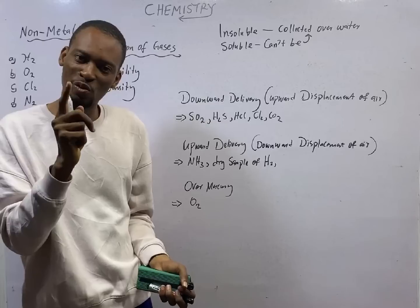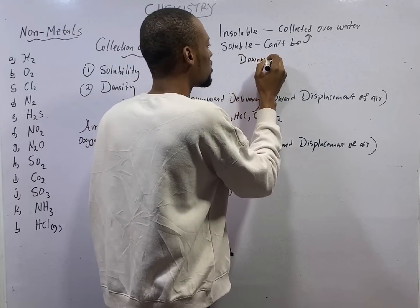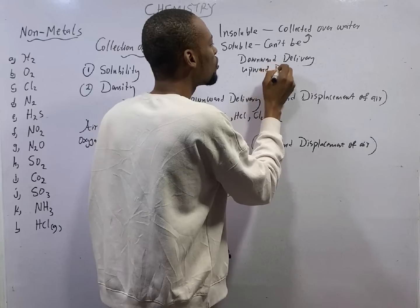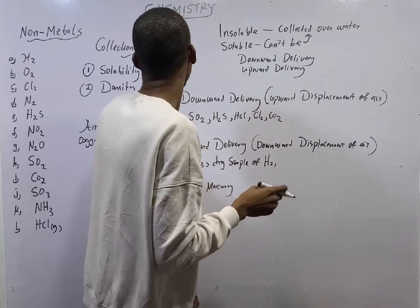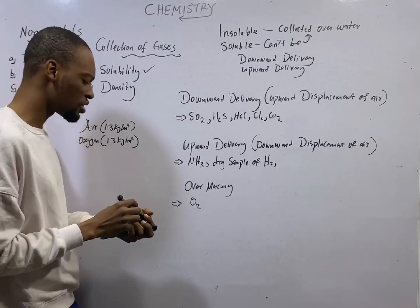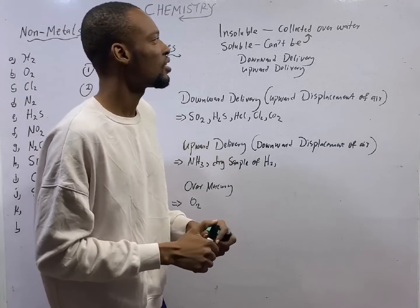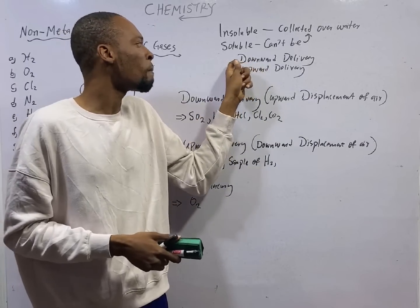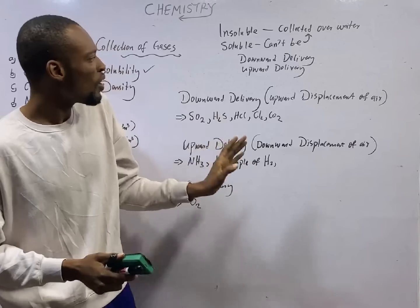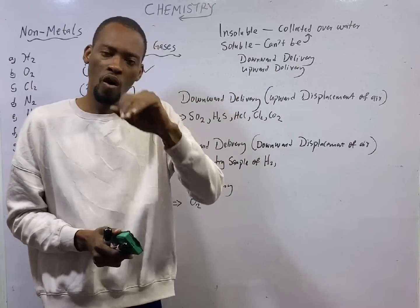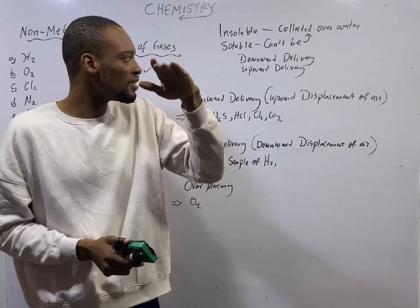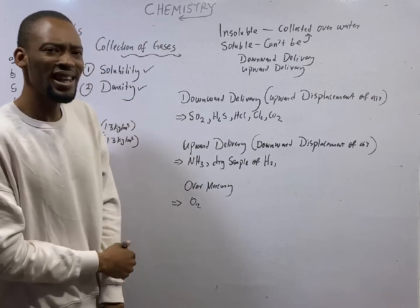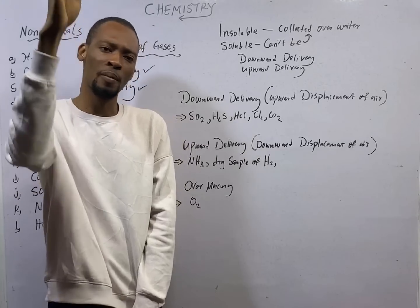We can do that in two ways. One, by downward delivery, and two, by upward delivery. We have used the principle of solubility to see whether it is collected over water or not. The gases that are soluble in water are collected by downward and upward delivery. Whether these gases will be collected by downward delivery or whether they will be collected by upward delivery has to do with their density. How dense are they? When a gas is denser than air, it is collected by downward delivery.